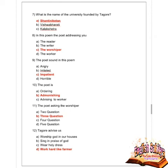Next question: what is the poet's tone in this poem? Options are angry, irritated, impassioned, and horrible. Option C is correct — impassioned. Next question: the poet is doing what to the worshippers? Options are ordering, admonishing, and advising. Option B is correct — admonishing.